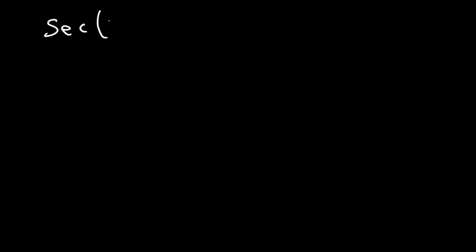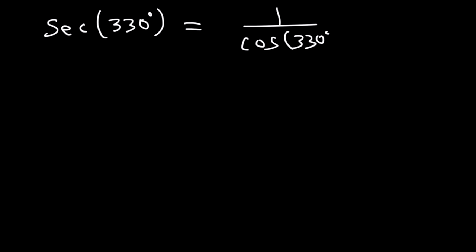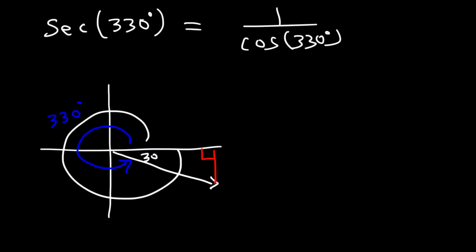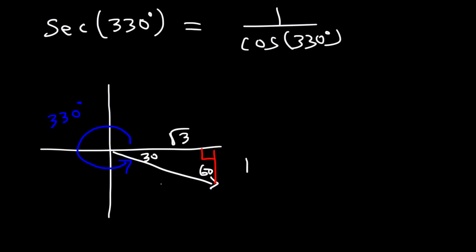Now try this one: what is the value of secant of 330 degrees? To evaluate secant, we first need to find cosine of 330. The angle 330 is located in quadrant 4, and the reference angle is 360 minus 330, which is 30 degrees. So we have a 30-60-90 triangle: across from the 30 is 1, across from the 60 is √3, across from the 90 is 2.